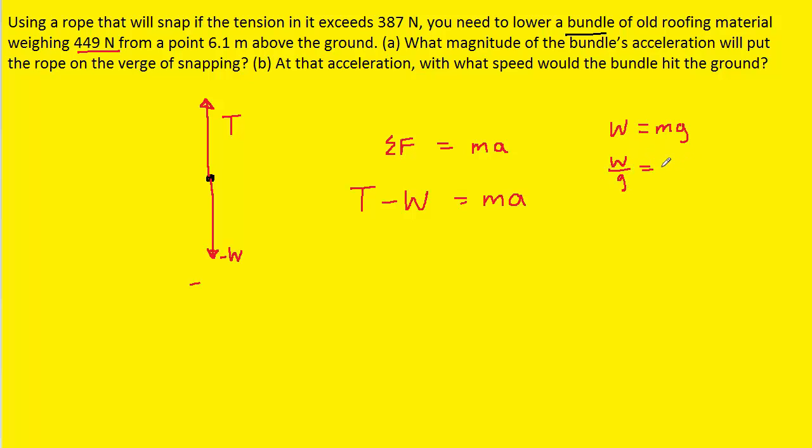The G's will cancel out on the right side so we can see that the mass is actually W divided by G. So we're going to substitute W divided by G in for the mass in our equation.